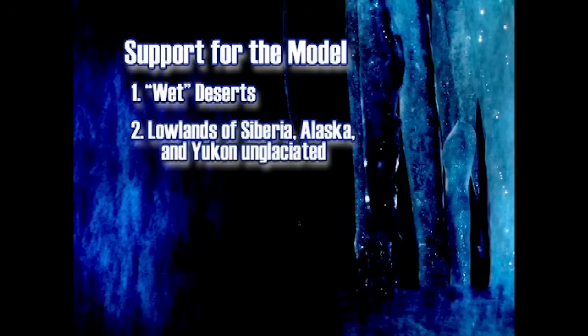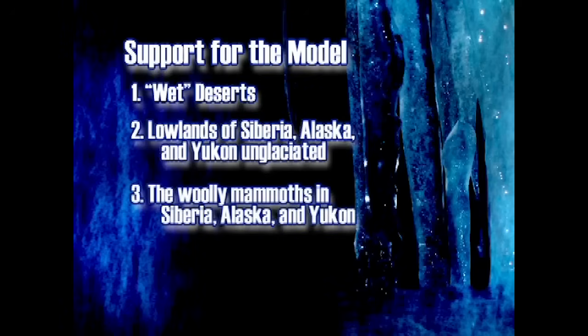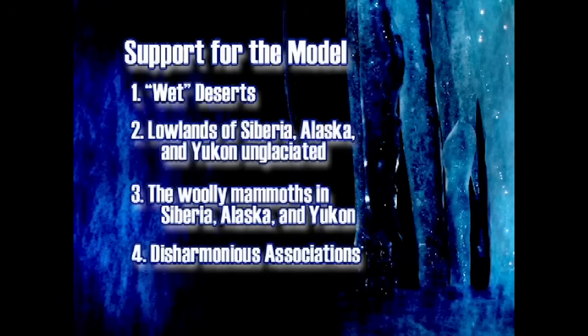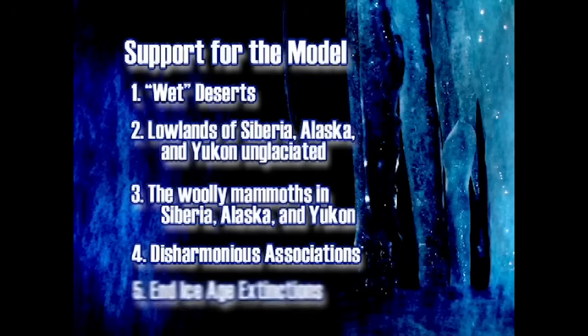I'm going to talk about the lowlands. Siberia, Alaska, and the Yukon are un-glaciated — this is a mystery of mainstream science. I'm going to briefly touch on an area I've worked on for about 15 years: the woolly mammoths in Siberia, Alaska, and the Yukon. There's lots of confusion here, but I believe it adds support to the model. I'll also discuss disharmonious associations during the ice age — where animals that love warm climates and those that love cool climates are fossilized together in ice age sediments — and end-ice-age extinctions as support for the model.